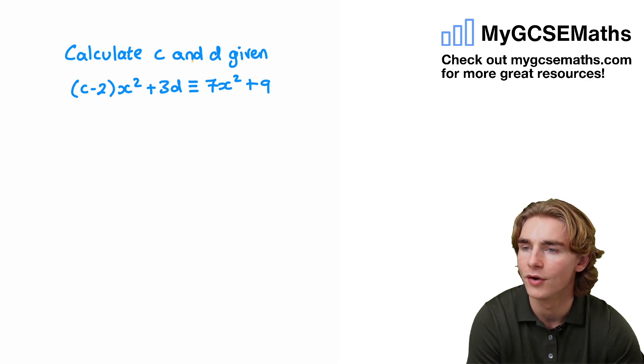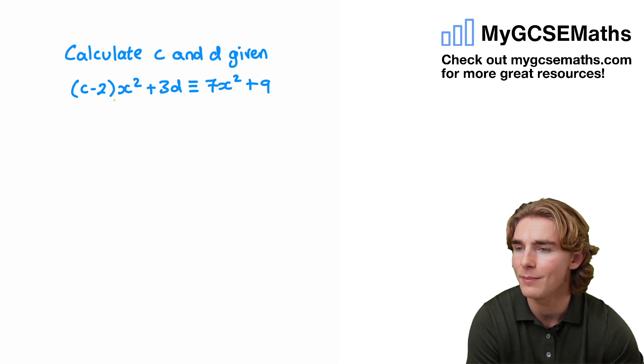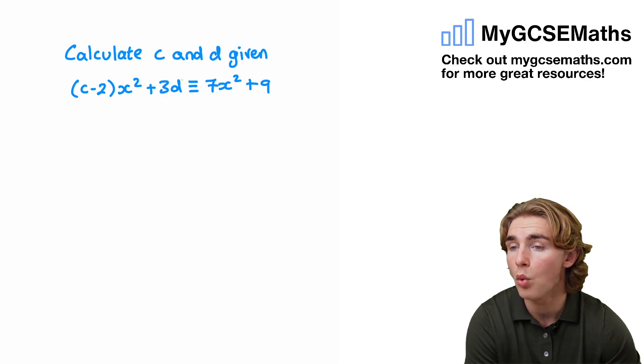What do we have to do here? We have to find a value of c and a value of d such that (c-2)x² + 3d is always the same as 7x² + 9, whatever the value of x.